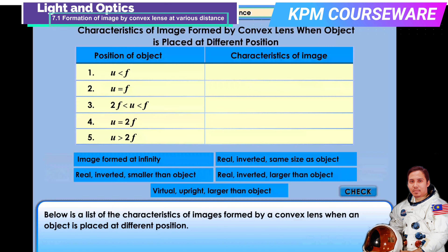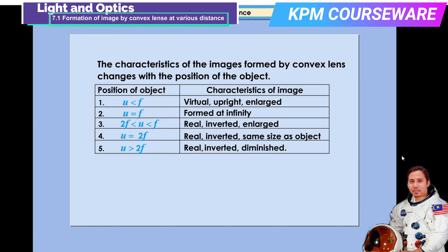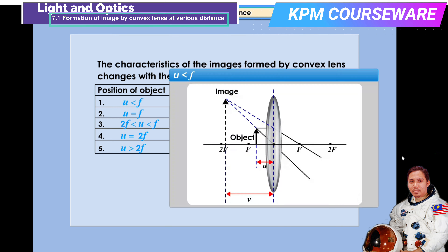The characteristics of the images formed by a convex lens change with the position of the object. If u is less than f, the image formed is virtual, upright, and enlarged.